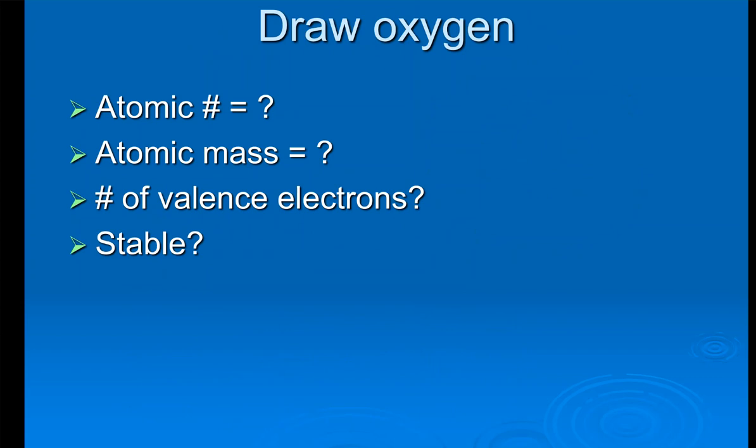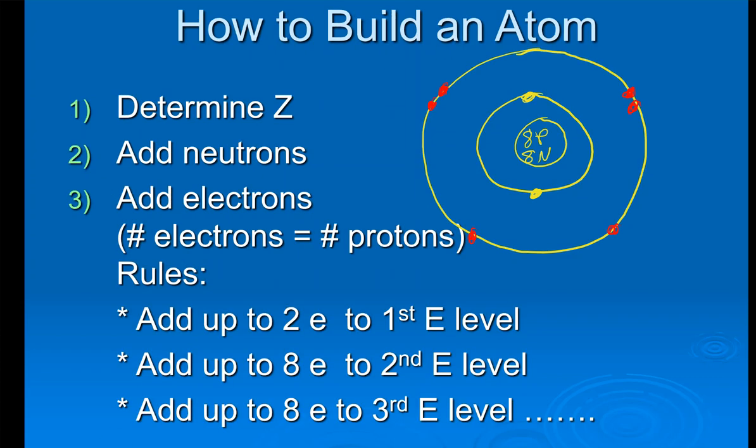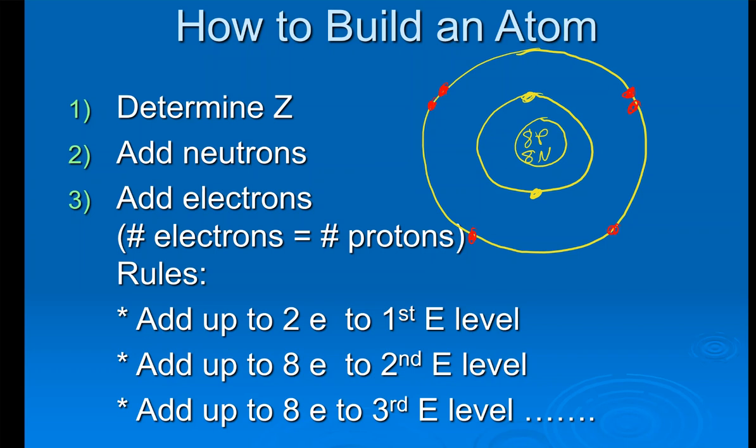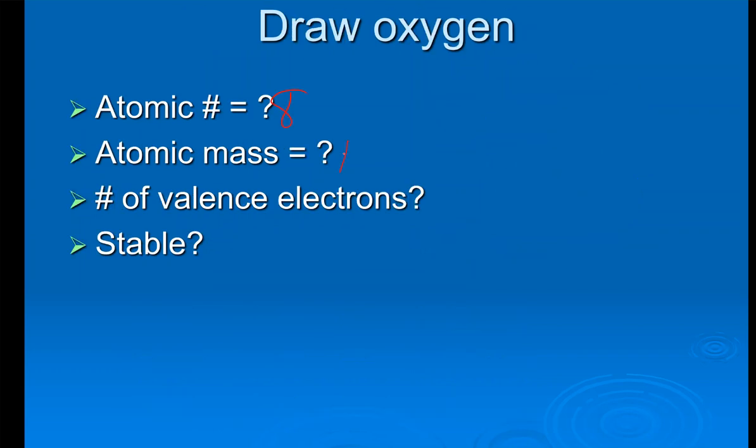So now that we have oxygen drawn, I want to answer a few questions. What is oxygen's atomic number? Well, hopefully you remember from just the last slide the atomic number was eight because there are eight protons. So we can put atomic number eight. What's the atomic mass? Well, hopefully you remember the atomic mass is the number of protons plus the number of neutrons. So for this atom of oxygen, the atomic mass would be 16. Now I don't want you looking at a periodic table and coming up with an average atomic mass. I just want you to put down the mass of your atom.